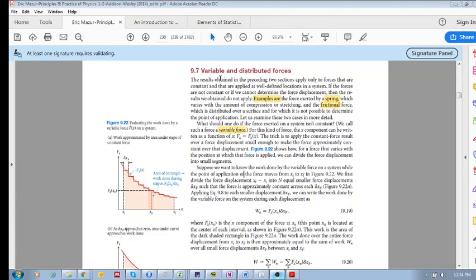Okay, so in section 9.7, we're going to look at two specific types of forces: variable and distributed forces. Why do they bring this out specifically? Well, most forces that we've been looking at thus far have been constant forces, meaning it was 10 Newtons or 100 Newtons over the entire time or over the entire distance.